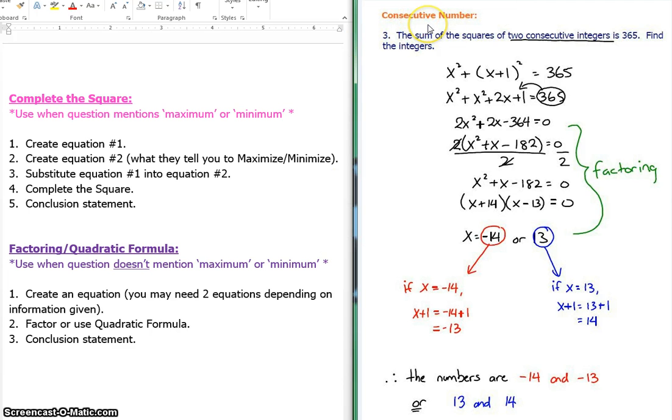Consecutive number questions. Now, a consecutive number means, let's say I'm talking about number 57, the next consecutive number will be 58. So if my number was x, my next number must be 1 more than x. So these are two consecutive numbers, and they're saying the sum of the squares of two consecutive integers is 365, find the integers. No mention of a maximum or minimum, we're factoring or using the quadratic formula. Since we have our formula already, we're just going to continue on to number 2, which is factoring or using the quadratic formula.